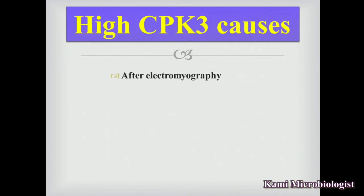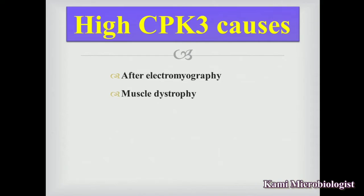Next we have the main causes of high CPK-3. CPK-3 can be caused by electromyography — a test that measures the electrical activity of muscles and the nerves that control them. When this test is performed, CPK-3 levels can get elevated. Another cause is muscular dystrophy, which is a genetic muscle disease in which muscles get progressively weaker and waste away over time.